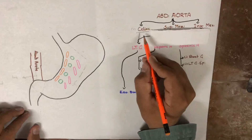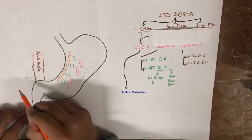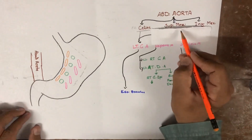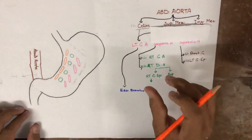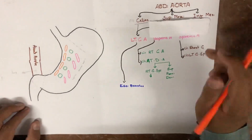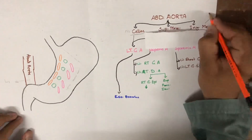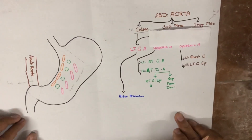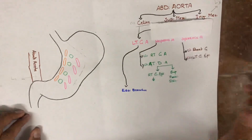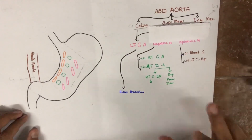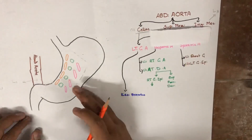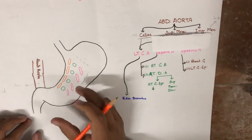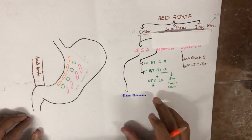The celiac artery arises at the upper border of L1, the superior mesenteric artery arises at the lower border of L1, and the inferior mesenteric artery arises at the level of L3. We are not going to talk about the superior mesenteric artery and inferior mesenteric artery because these arteries do not supply the stomach. We will talk only about the celiac artery, which is the main source of supply of the stomach.